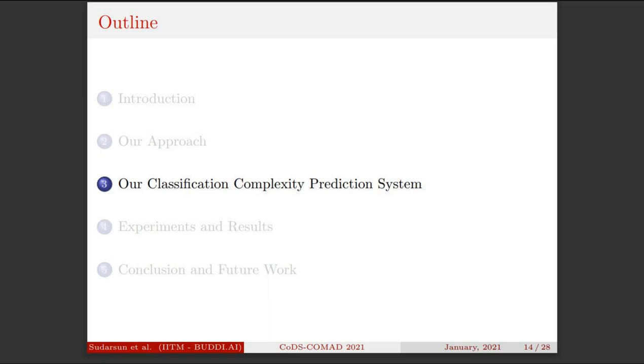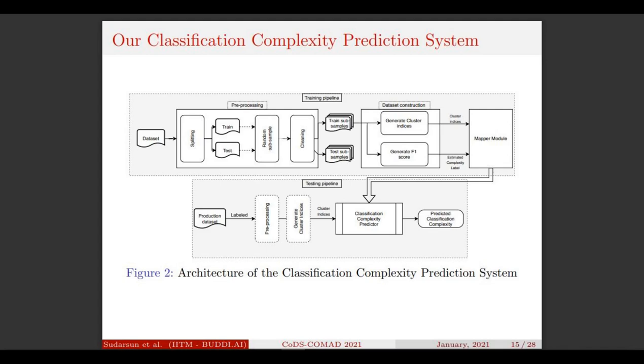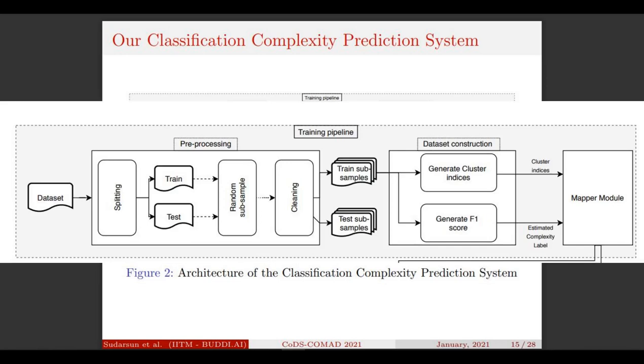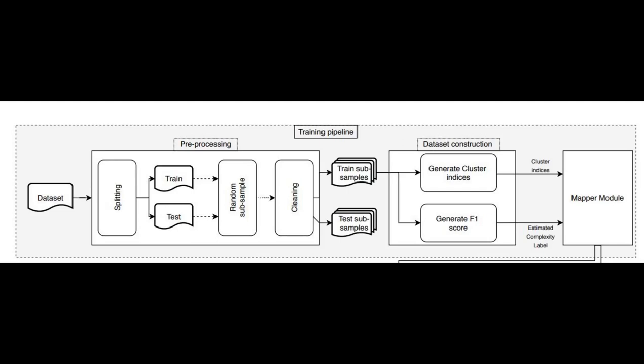Moving on to our next part in the presentation. In this part, we take an in-depth look at our fully automated classification complexity prediction system. The entire architecture is divided into two pipelines: the training pipeline and the testing pipeline.